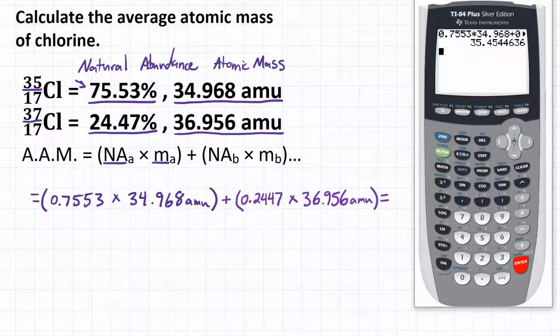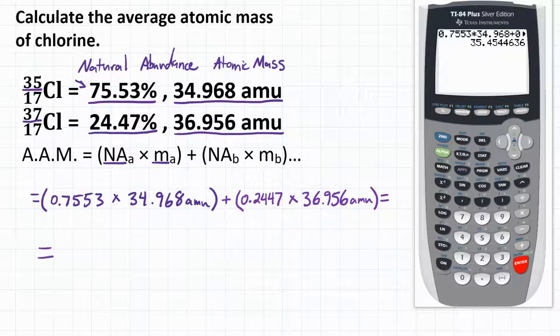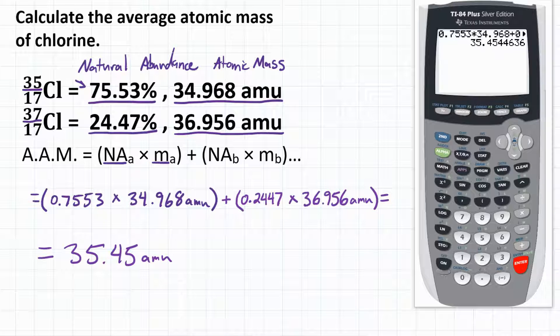and our calculator gives us 35.4544636. Let's round that to four significant figures, and we will get a final answer of 35.45 AMUs for our average atomic mass. So final answer, what is the average atomic mass of chlorine? Again, that would be 35.45 AMUs.